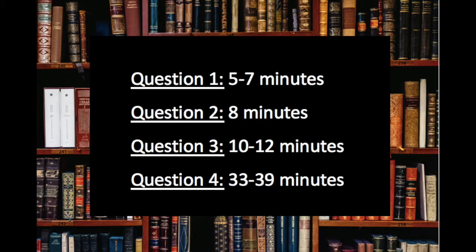Before I start to discuss Paper 2, I want to talk about how you should split your time up while writing Paper 1. It's recommended that you should give yourself five to seven minutes for number one, eight minutes for number two, 10 to 12 minutes for number three, and 33 to 39 minutes for number four. You're giving the most time to number four because you're writing a smaller essay and it's the biggest piece, so you're going to want to save most of your time for that writing.